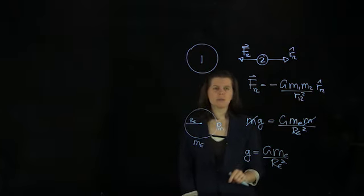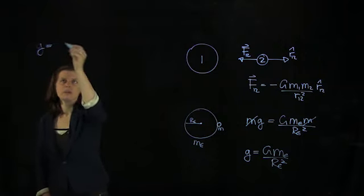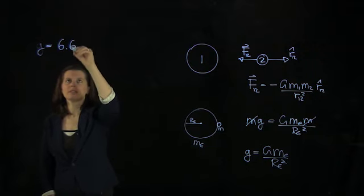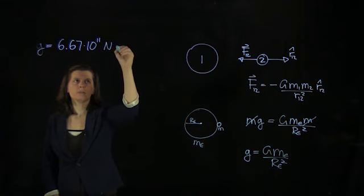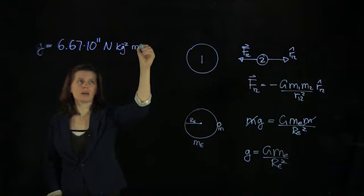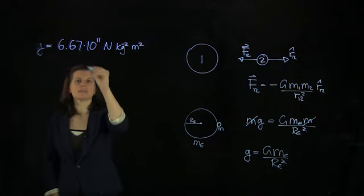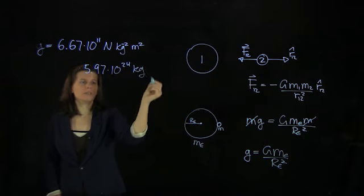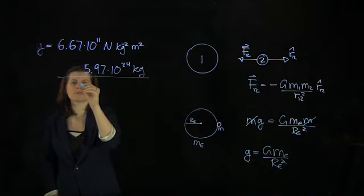Now let's put some numbers into this equation. So we have G is capital G. That's the gravitational constant. We have 6.67 times 10 to the 11. And then we have Newton times kilogram squared and mass squared times the Earth mass, 5.97 times 10 to the 24 kilograms.